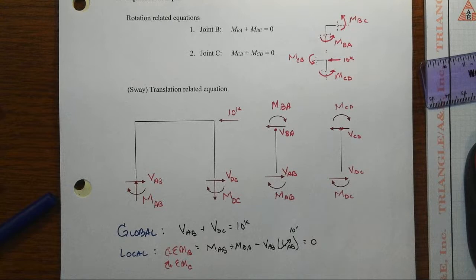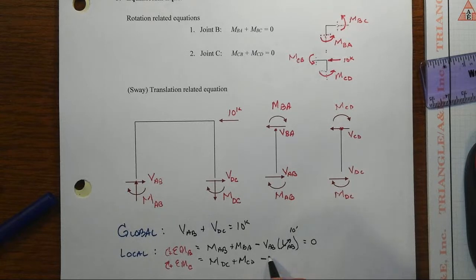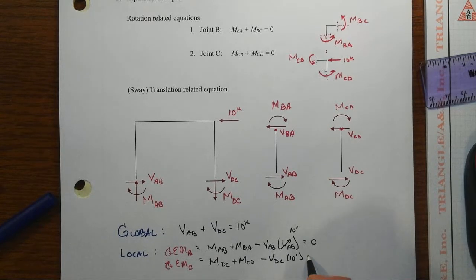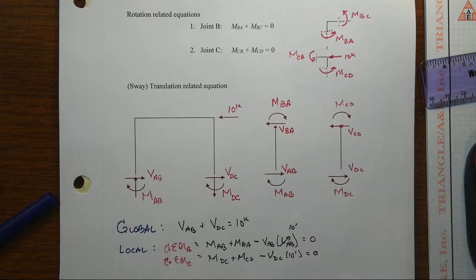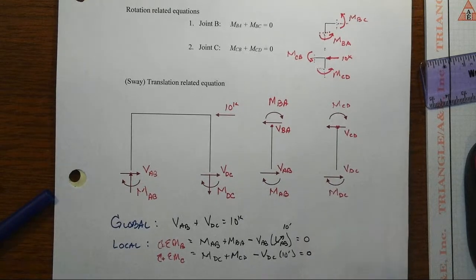And we get then that MDC plus MCD minus VDC times 10 feet is again equal to zero. How does that help us? It gives us equations that we can now substitute in up here.